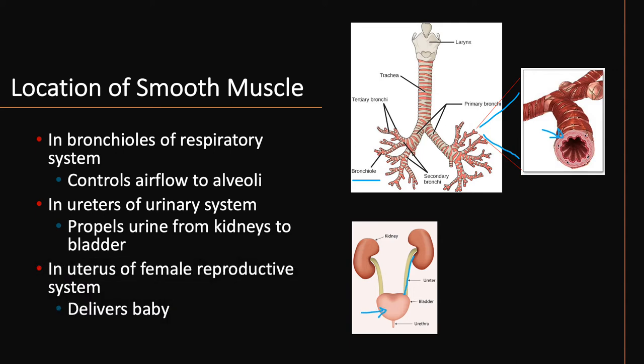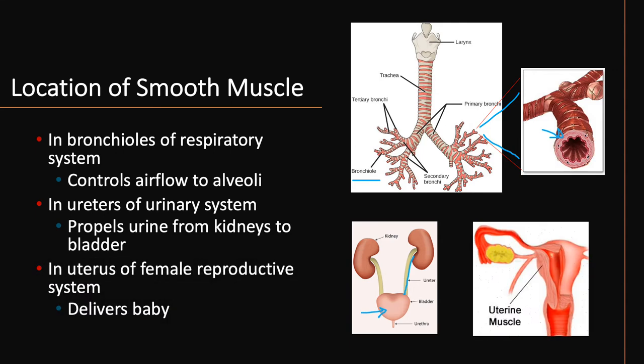And then finally we have the uterus of the female reproductive system — uterine muscle. As an example, my wife right now is nine months pregnant and she is having what are called Braxton Hicks contractions. These are contractions that help tone the uterus, this smooth muscle, and prepare it for labor to deliver the baby.